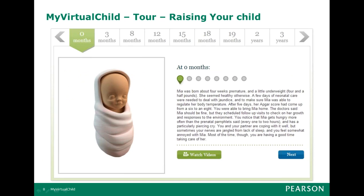This is what the student would see. They'd go in and see their child, starting as a newborn at zero months. Along the top they've got different milestones: three months, eight months, 12 months, 15 months, and so forth, all the way up to age 18. Within each section, you'll see a couple of different decision points along the way. Some of them don't require a decision — they're just giving information about what's happened. This will be a little bit different for every student, with slightly different births and slightly different effects as it goes through.